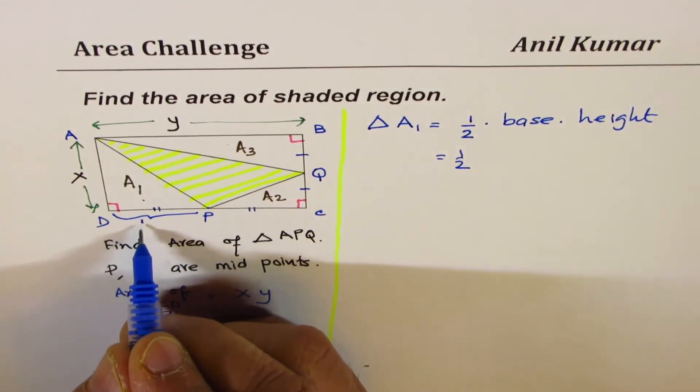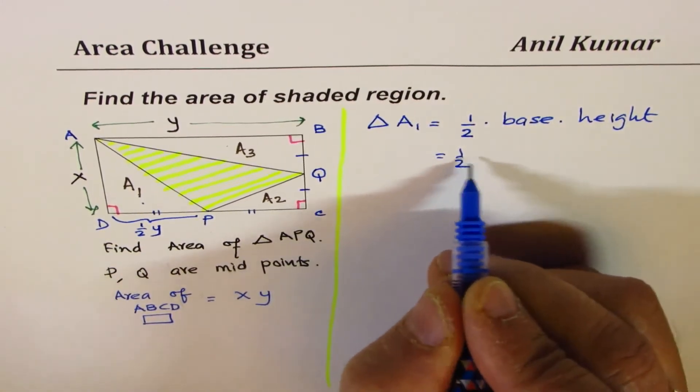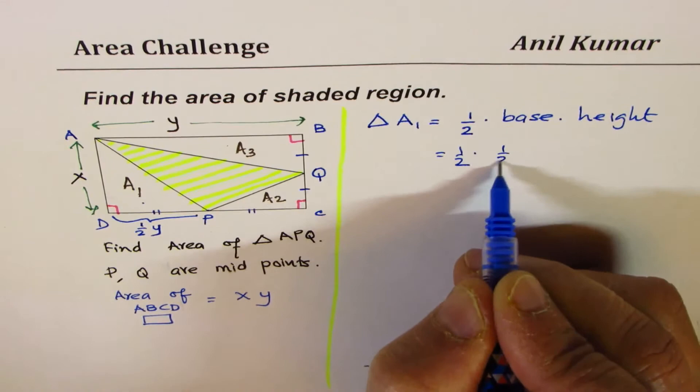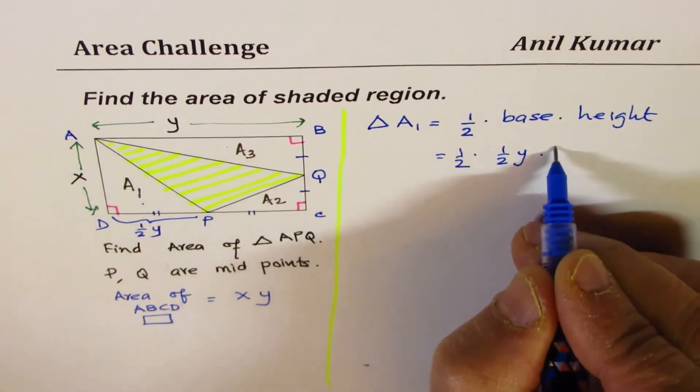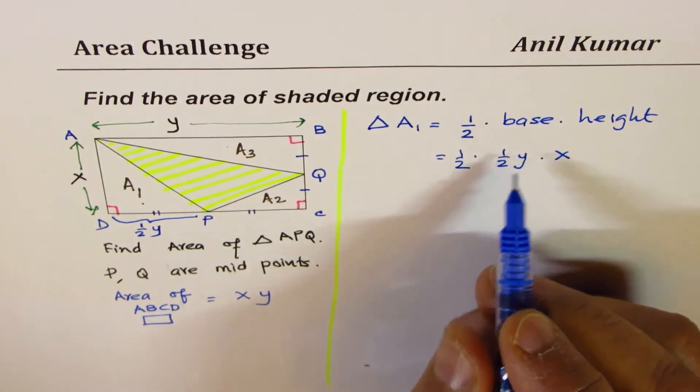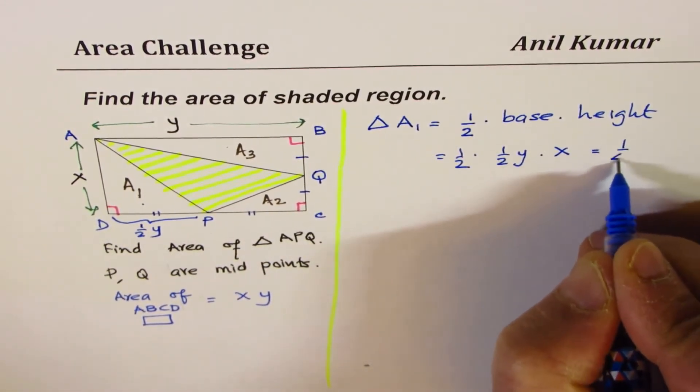This is half of Y, so base is half Y. And what is the height? Height is X for us. So that becomes the area of triangle 1. I could write this as 1/4 of XY.